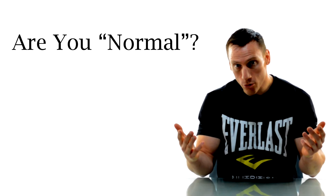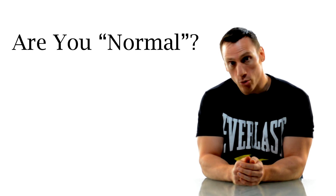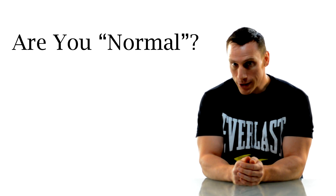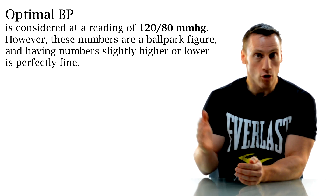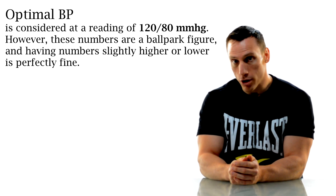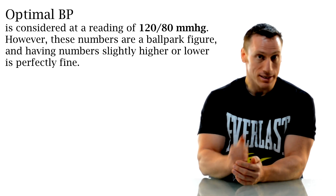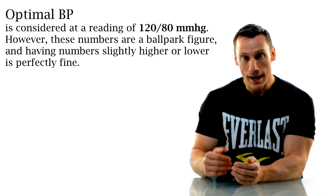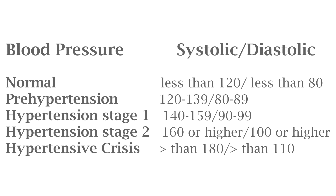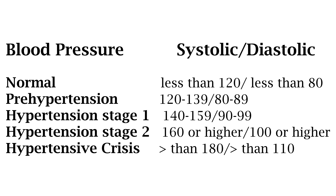So are you normal? Well, that's all relative. Optimal blood pressure is considered to be 120 over 80, but that's a ballpark figure — you may have a number slightly higher or lower that is perfectly normal for you. Normal blood pressure has a systolic less than 120 and a diastolic less than 80. Unless you're having symptoms like feeling faint or dizzy, there's no real need to worry if your numbers are lower than these.